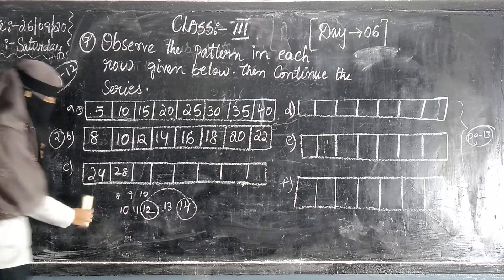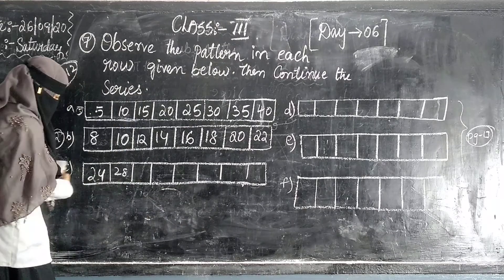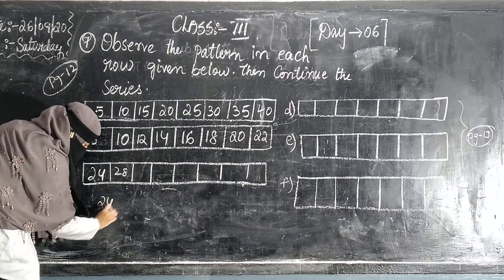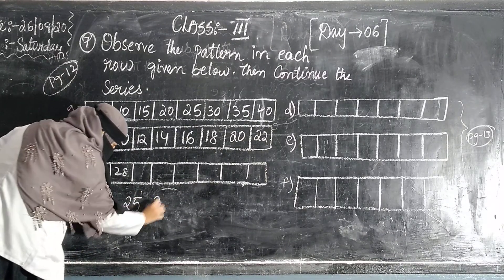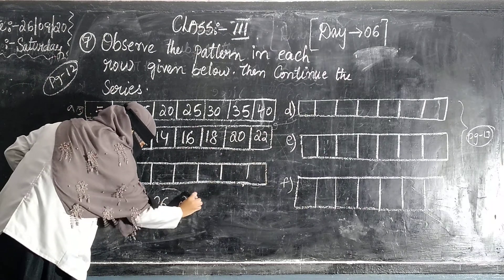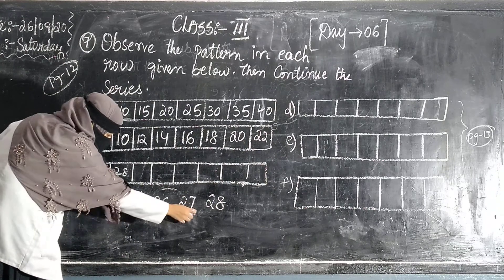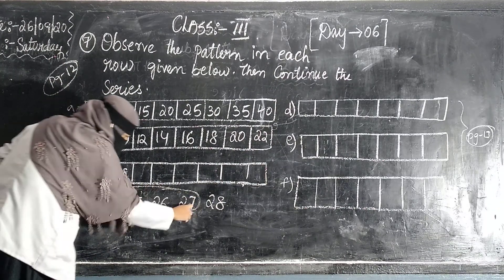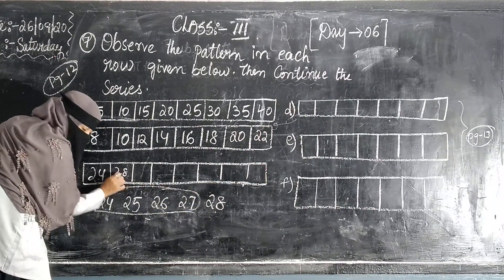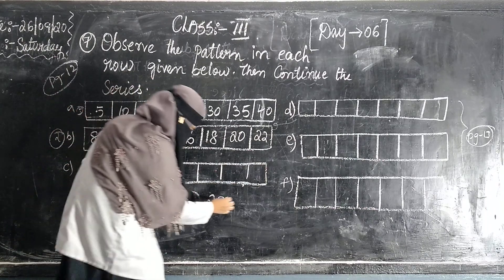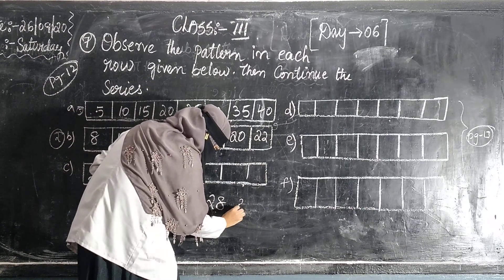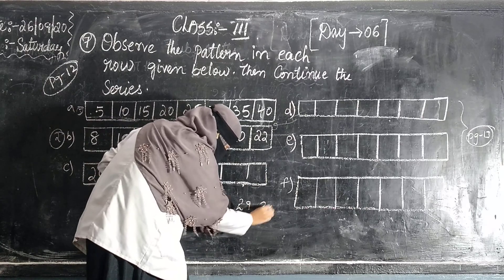2 times 7 is 14. 2 times 8 is 16. 2 times 9 is 18. 2 times 10 is 20. 2 times 11 is 22. 2 times 12 is 24. 24 to 28, which number? How many counts? 24, 25, 26, 27, 28. 1, 2, 3, 4.